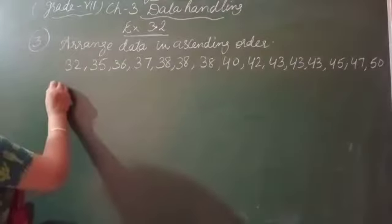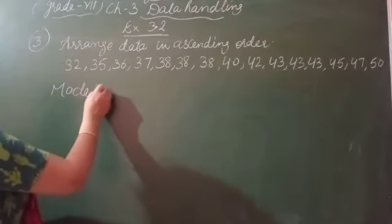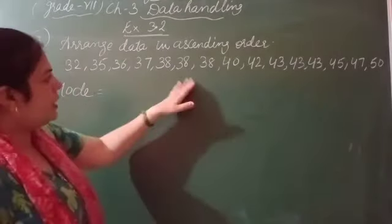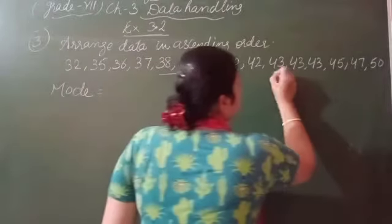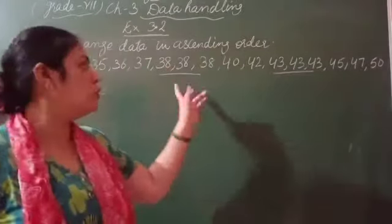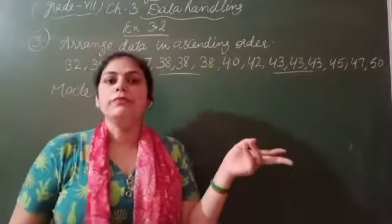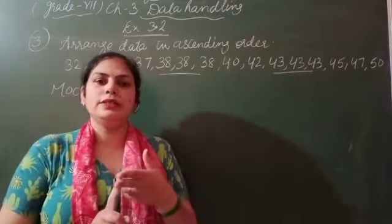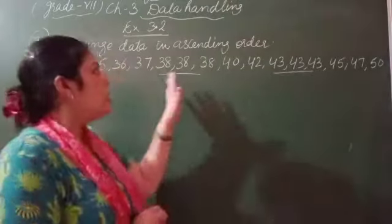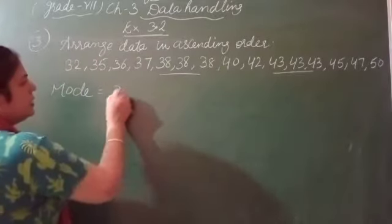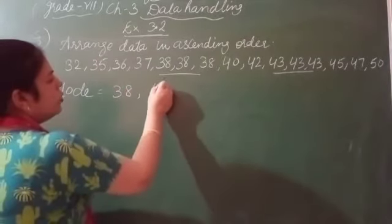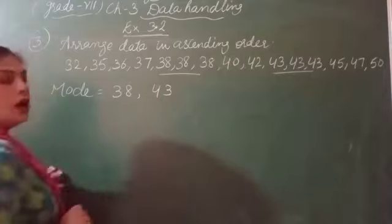First, we have to calculate mode. Mode kya aega yaha pae? 38 appears 3 times, 43 also appears 3 times. Both values have the same frequency. So your mode is 38 and 43. This is your mode.